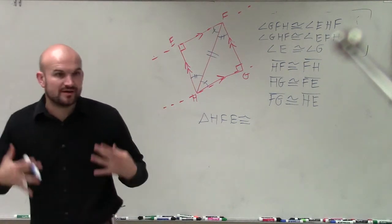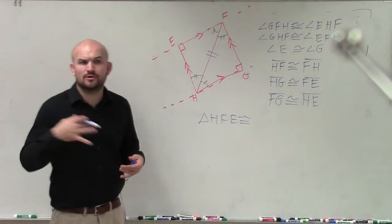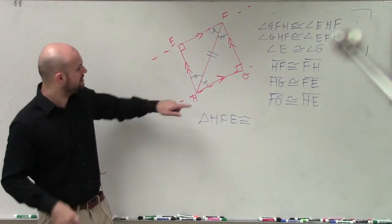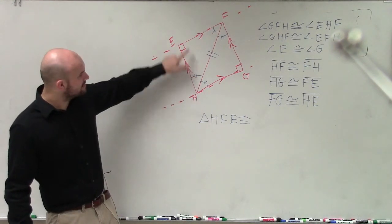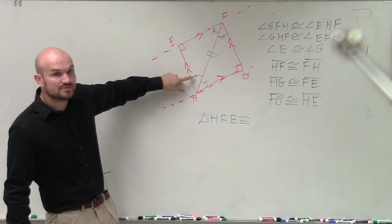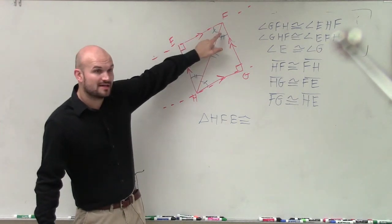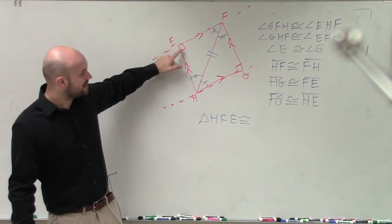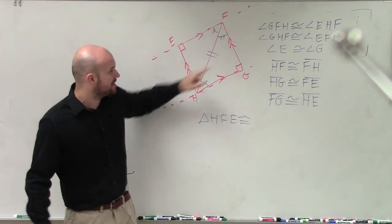And again, the order is very, very important. Dennis, I don't know what you have done, but exactly. So you have your, I started with this triangle. I have H, which has two tick marks, to my F that has one, to my right angle.